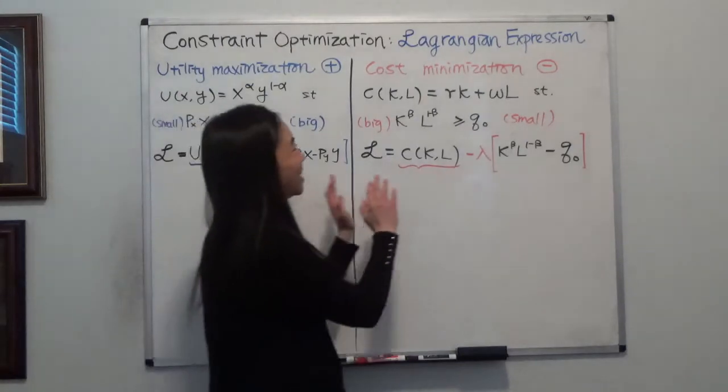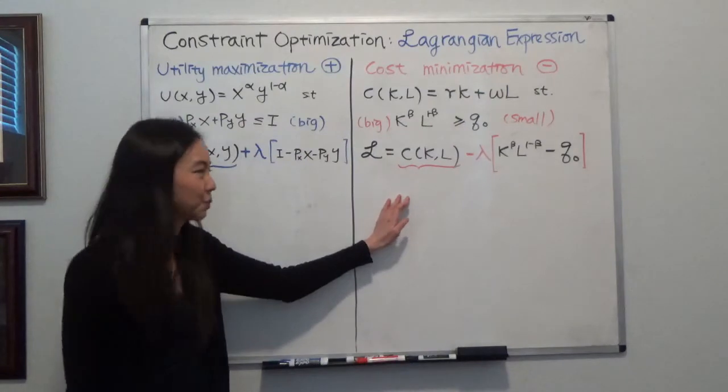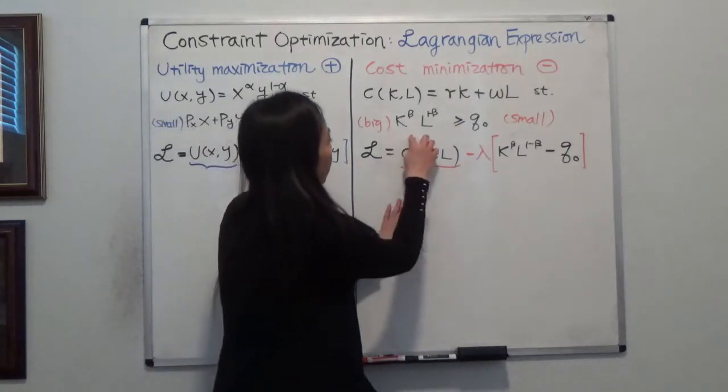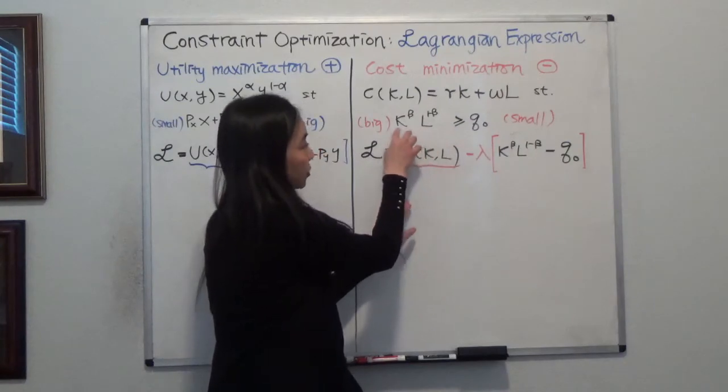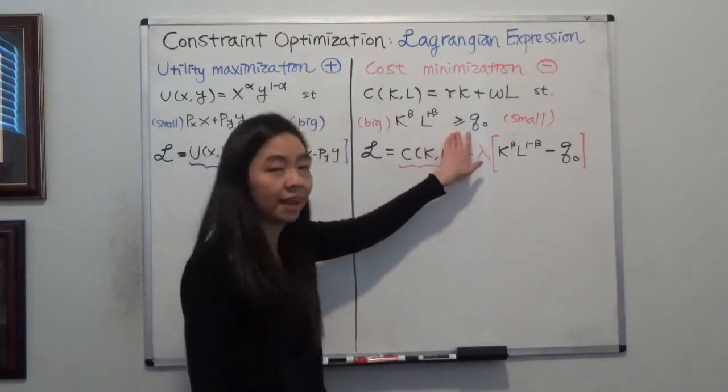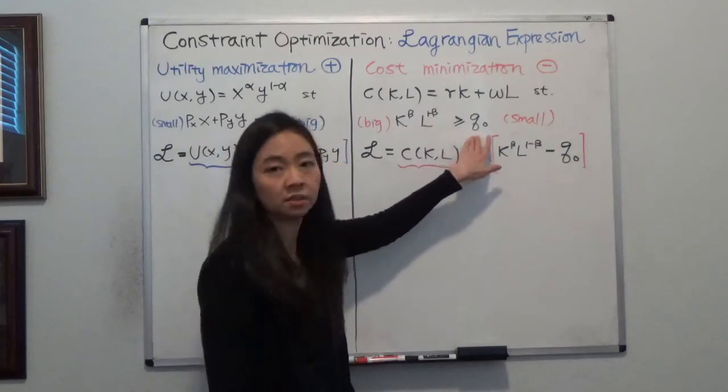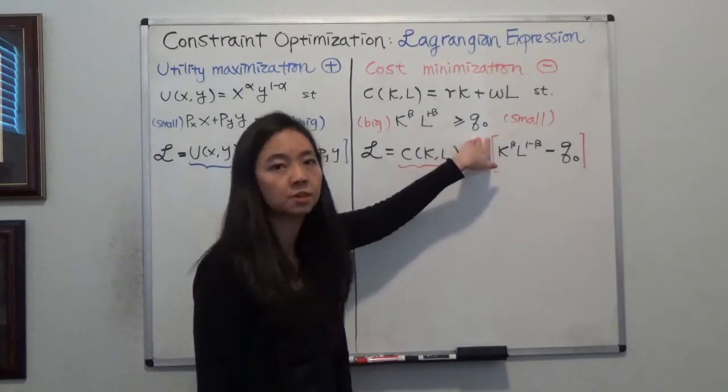And moving on to our cost minimization. When you're trying to minimize your cost, typically the constraint is here. Your output, after you apply your capital and your labor, has to be greater than or equal to a certain quantity Q0. So Q0 is a number, could be 10 or 100, something like that.